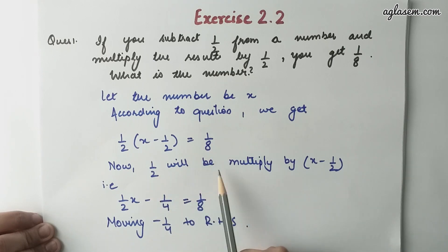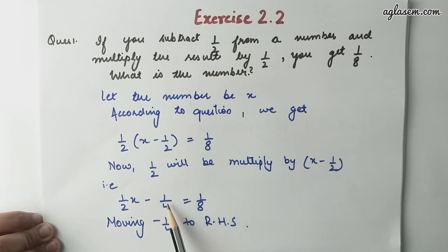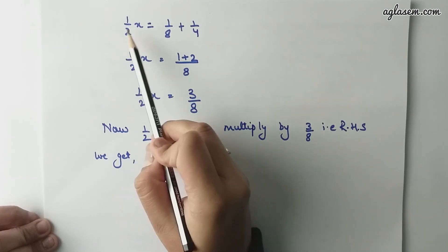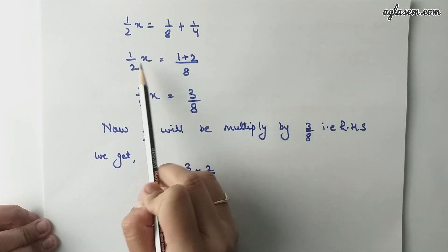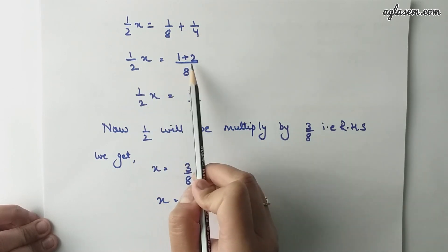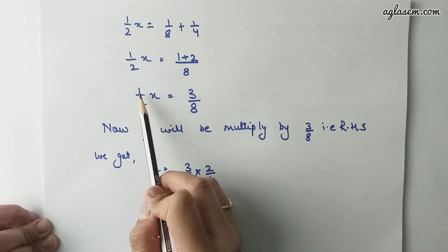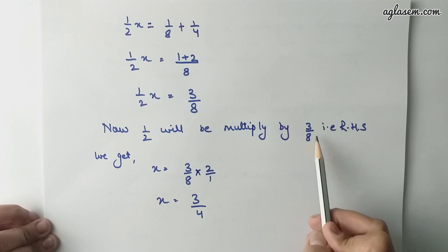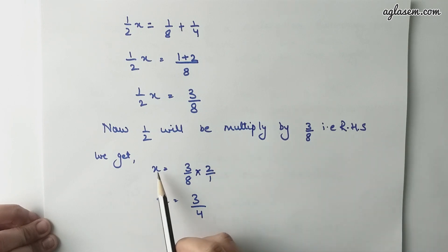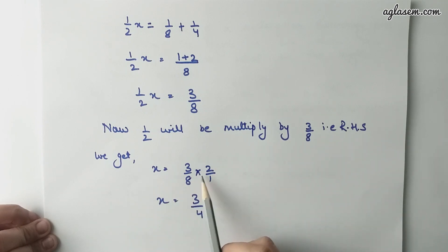Now, 1 by 2 will be multiplied by (x minus 1 by 2), which gives 1 by 2 x minus 1 by 4 equals to 1 by 8. Moving minus 1 by 4 to RHS, we get 1 by 2 x equals to 1 by 8 plus 1 by 4, which gives 1 by 2 x equals to 3 by 8. Therefore, x equals to 3 by 8 into 2 by 1, which is equals to 3 by 4.